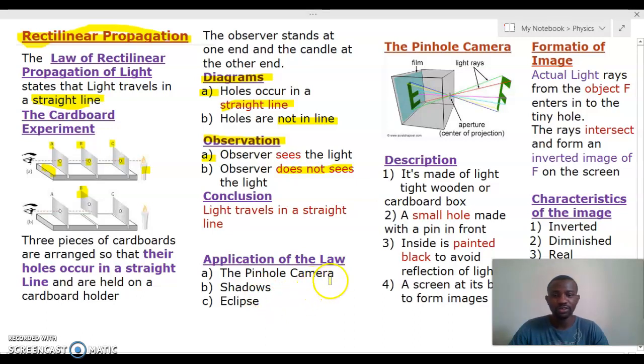So we want to first of all in this video treat the first one A, which is the pinhole camera. So what is this pinhole camera thing? You can see, one, it is made of a light-tight wooden or cardboard box. That means that we design it in such a way that light does not enter into it from the sides. So you can use either wooden material or a cardboard to design such a box.